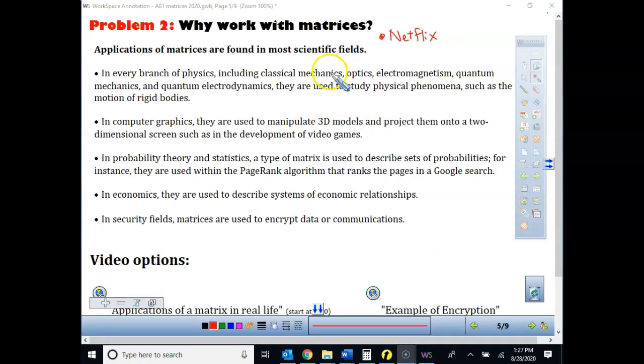So the first question, students are like, why are we working with this? This doesn't make sense. This is hard, or applications for matrices can be found in most scientific fields, and I will tell you, Netflix, Hulu, Disney+, that's how they keep coming up with an algorithm for what shows you've watched and what you might like. So one of the places is in the branch of physics, including all of these different areas. They are going to be using matrices to help them sort out and work with their problems. Computer graphics, that's the only way to manipulate 3D models. So from a two-dimensional screen to show it 3D, so you wouldn't have your video games if you didn't have matrices. It's in probability theory and statistics. The type of matrix is used to describe our probabilities. They try and come on rank page. So if you think of Google search, the things that come up first, and that would, again, kind of be how Netflix and some of your movies. In economics, it's a way to describe a system. There's different security fields that are going to use these.